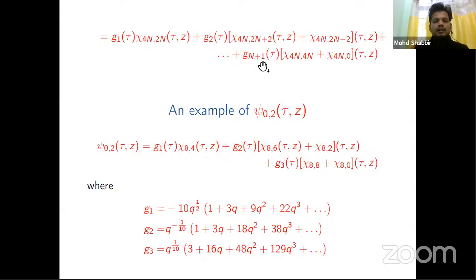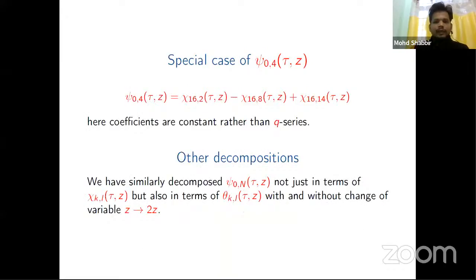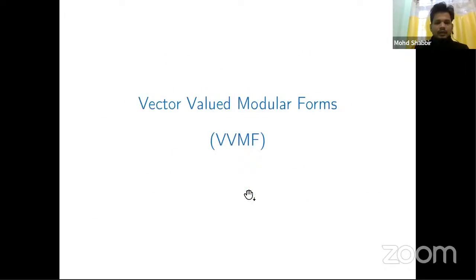We decompose ψ_0,N for N = 1, 2, 3, and 6 like this, and we computed g_1(τ) and g_2(τ) and others as q-series. For example, here you can see these—we got them up to pretty high orders. For ψ_0,4, there's a special case. We got constants instead of q-series. There are other decompositions like this.